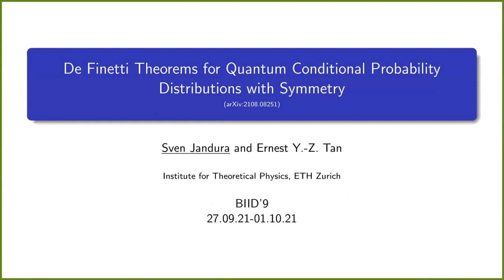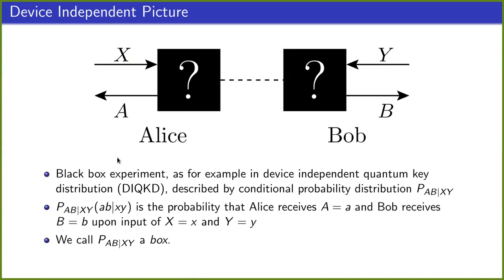Let's immediately get started and consider a black box experiment, as for example in the DIQKD case, where we have two parties, Alice and Bob, and some black box shared between the two. Alice can enter some value x into her black box and receive some output value a, and Bob can enter some input value y into his side of the black box and receives output value b.